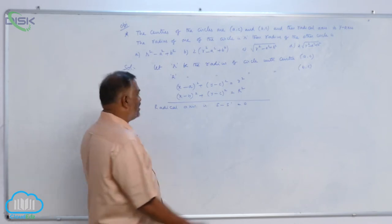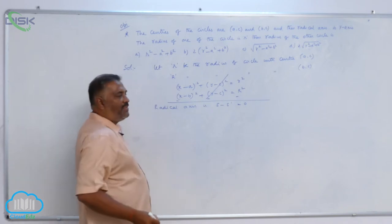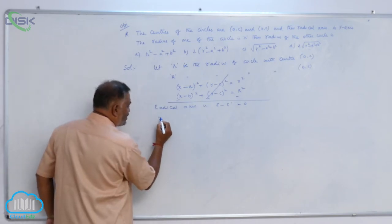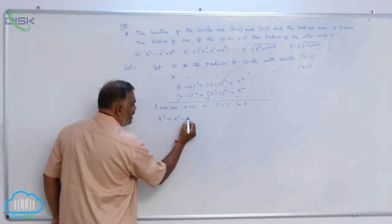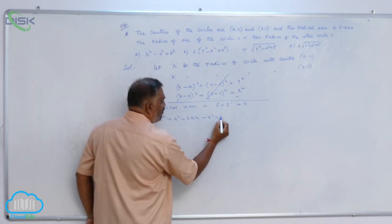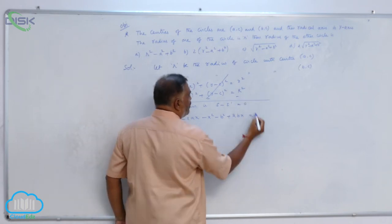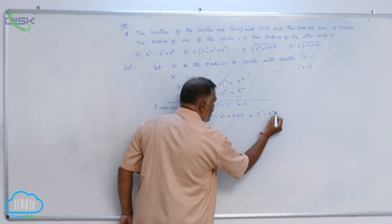That means take subtraction. Minus minus minus gets cancelled. Now expand: x² + a² - 2ax minus x² - b² + 2bx = r² - R².